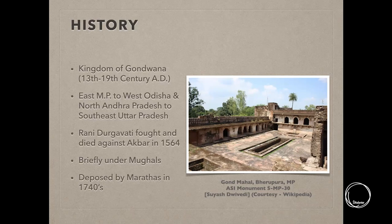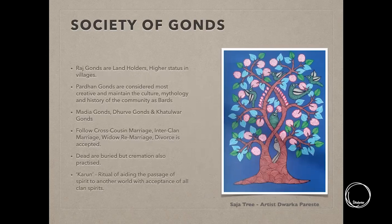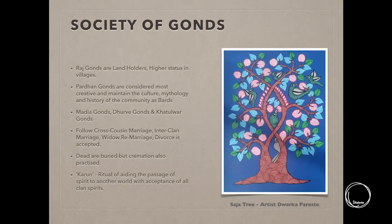Here you can see the Gond Mahal in Behirapura, an ASI monument. Let's understand a little about Gond society. Being a very large community, they have various branches depending on what role they play for the larger Gond community. The highest one is the Raj Gonds, who are landowners and enjoy a very high status. Another branch is the Pradhan or Pardhan Gonds, who are considered the creative aspect of the community — they maintain the culture, mythology, and history of the community through bardic traditions.